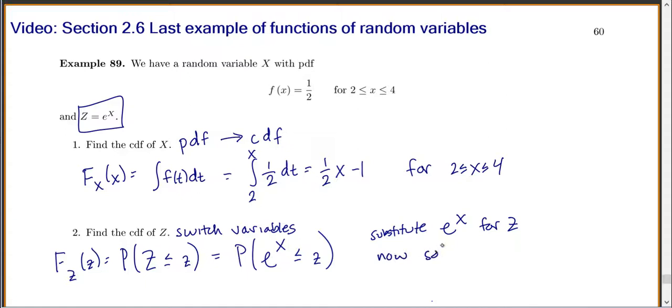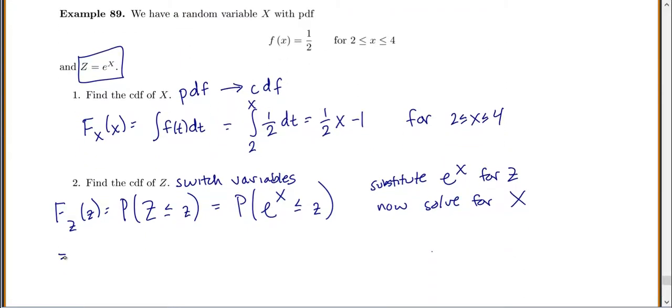And now we'll solve for X, capital X. So if we're going to look at this, we want to solve for capital X, we have this e. We want to get it out of the exponential, so we'll take the natural log of both sides. So we'll have X less than or equal to the natural log of z.